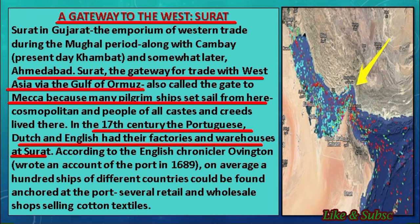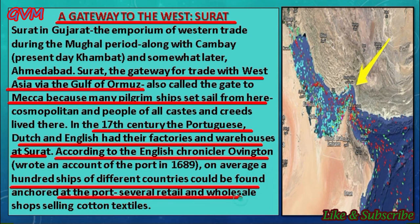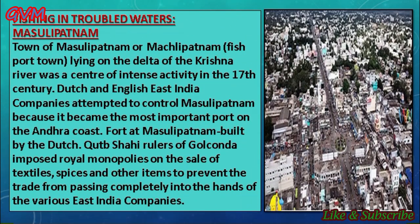The textile industry of Surat was famous for its zari work and had markets in West Asia, Africa, and Europe — that is why the Portuguese, Dutch, and English set up their factories and warehouses there. According to the English chronicler Ovington, who wrote an account of the port in 1689, on an average a hundred ships of different countries could be found anchored at the Surat port, and there were several retail and wholesale shops selling cotton textiles.